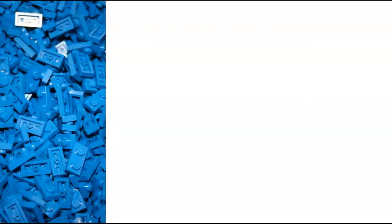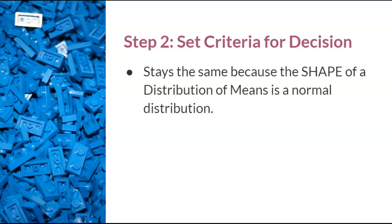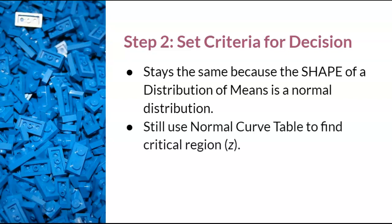Step two, the blue lego, is to set criteria to make a decision where the study worked or not. Guess what? This step stays the same. Because the shape of a distribution of means is a normal distribution, you will do the steps as before while still using the normal curve table to find critical region Z.